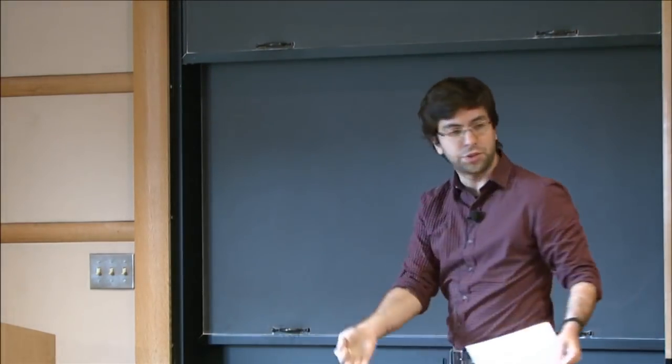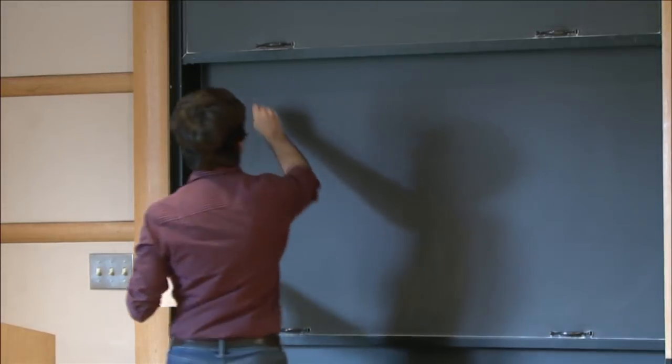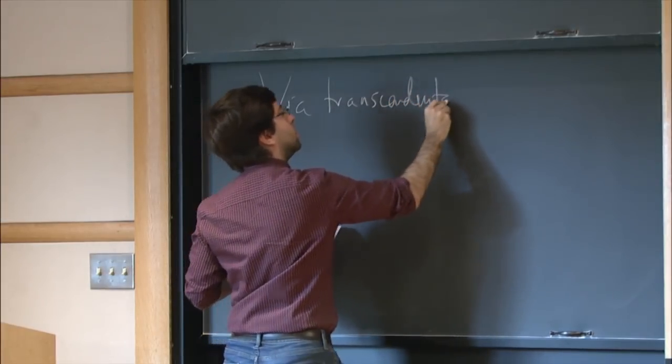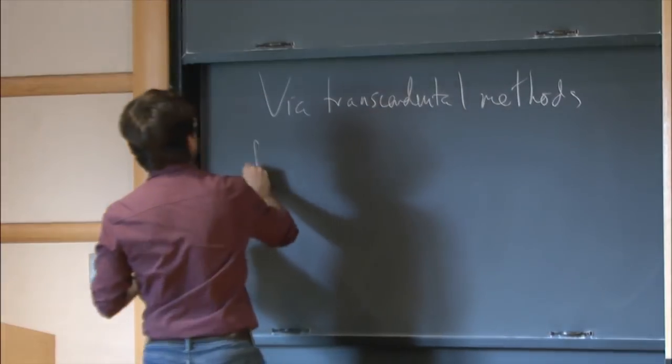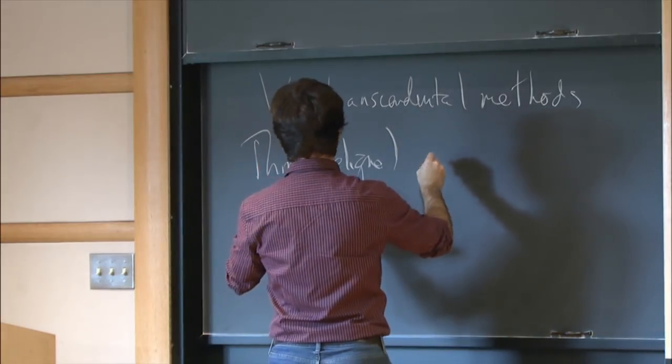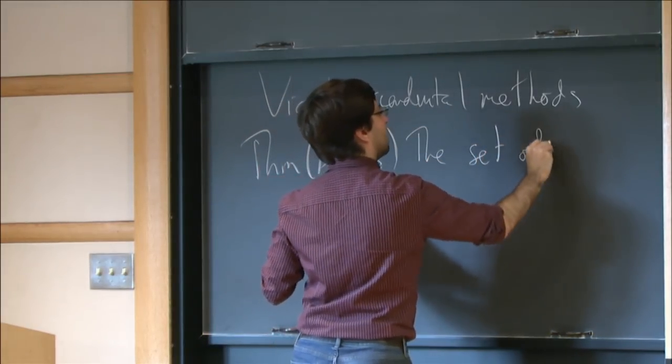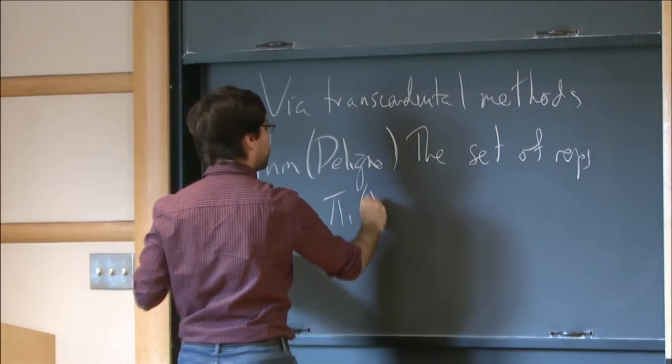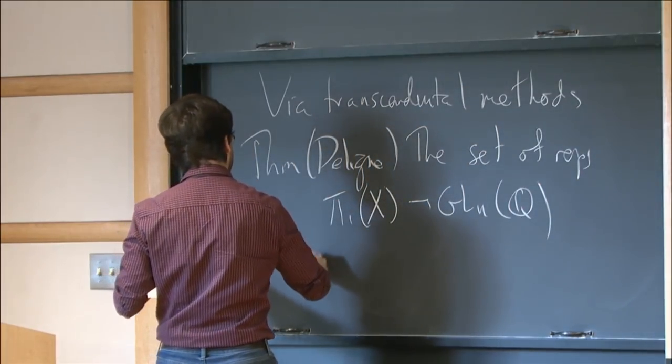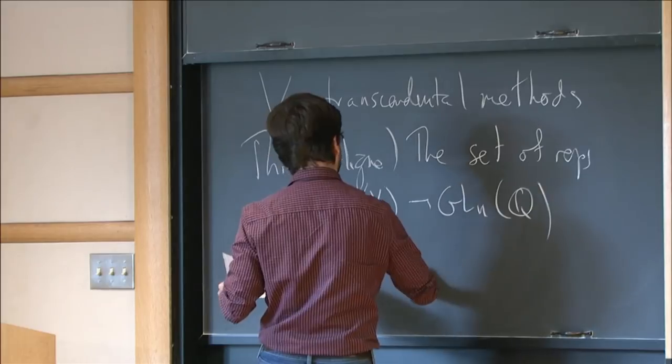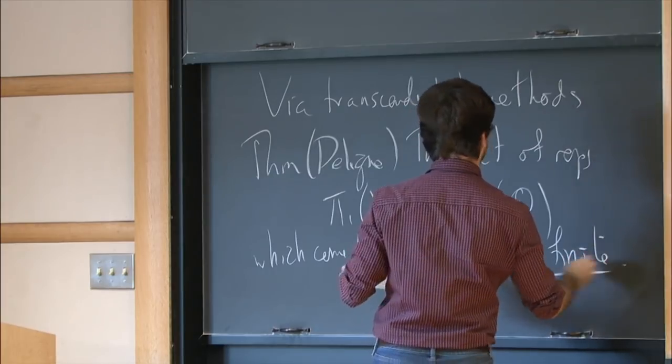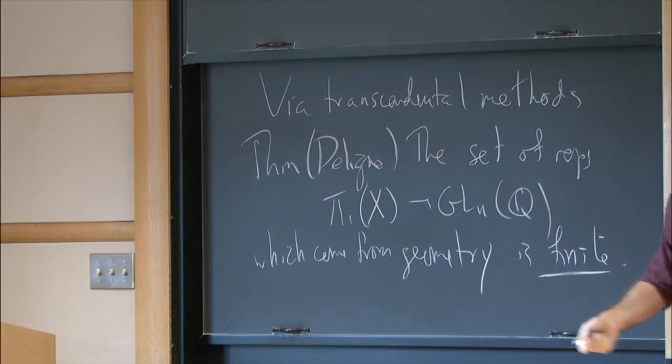Now, Professor Deligne showed a while ago that this is a very restrictive condition. Via transcendental methods, Deligne showed the following theorem. The set of reps from pi_1 of my fixed Riemann surface into GL_n(Q), which come from geometry, is finite. So if you fix x and fix n, there's only finitely many representations that show up this way.